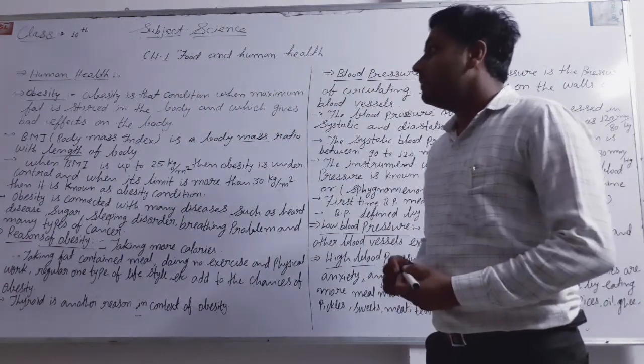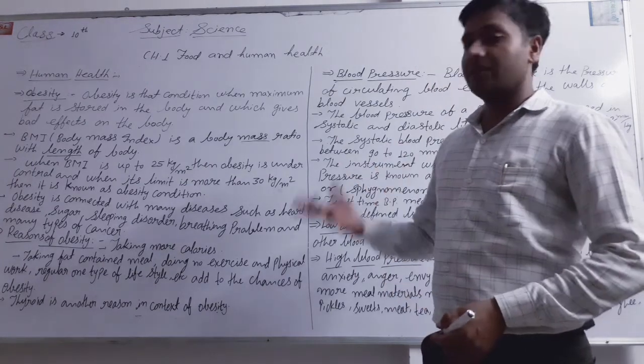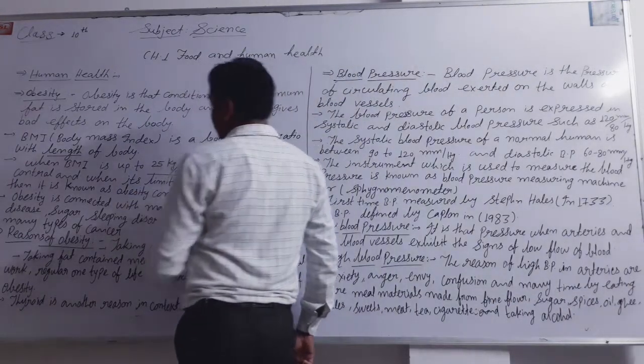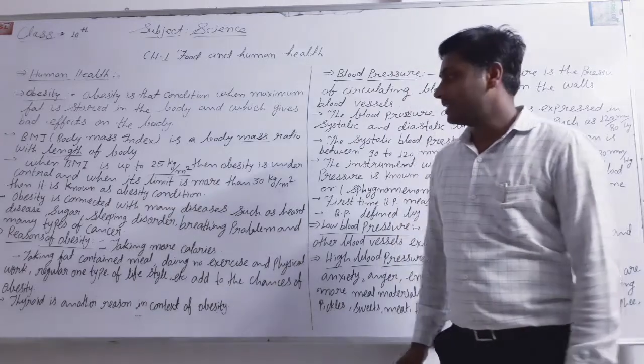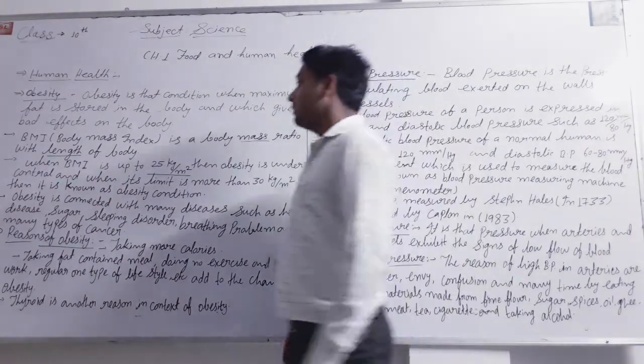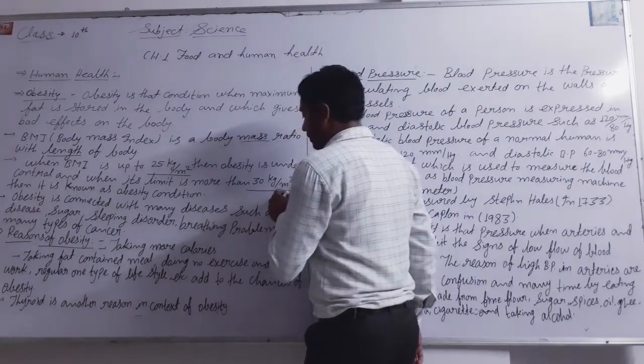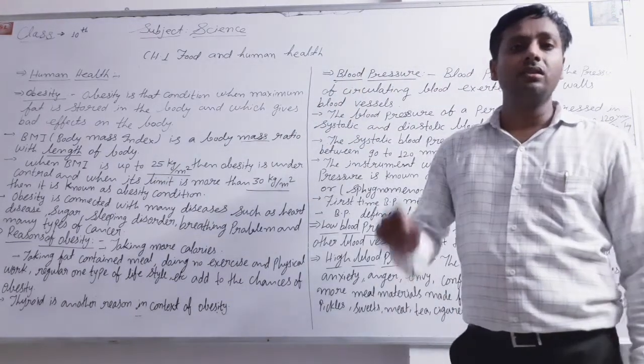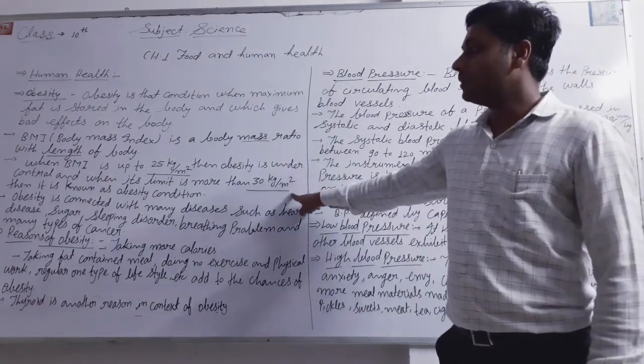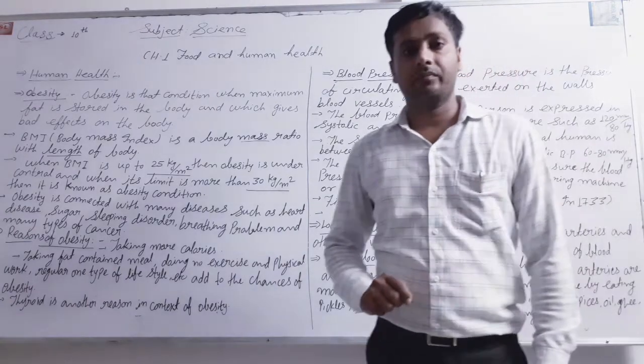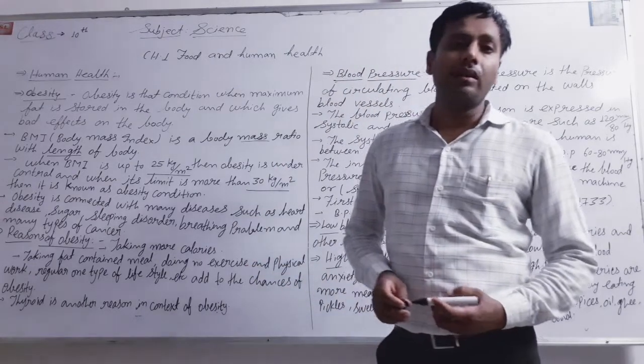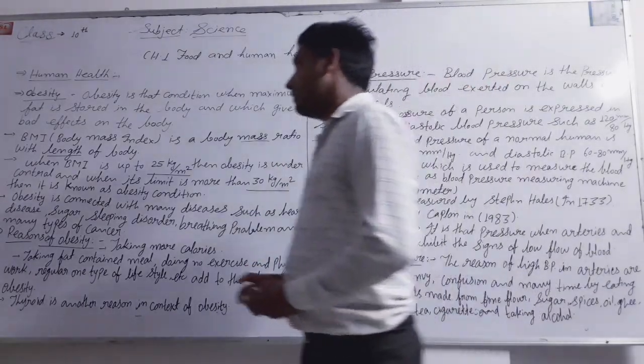Now there are different conditions. Normal condition is when BMI is less than 25 kg per meter square. If BMI is more than 30 kg per meter square, this condition is obesity.